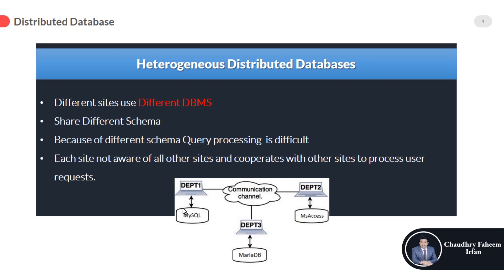Because of the different schema, query processing is very difficult. For example, if I need to get data from department 1 and department 2, and department 1 uses MySQL while department 2 uses MS Access, it is a bit difficult to get data from both. Each site is not aware of all other sites and does not cooperate with other sites to process user requests. Due to the different schema and different DBMS, query processing is slow and all sites are not cooperating with each other.